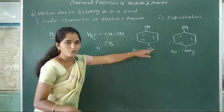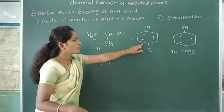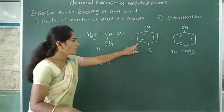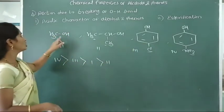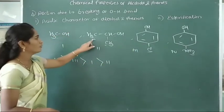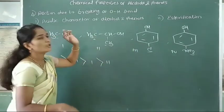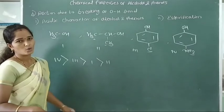The acid strength order of these compounds is: first, nitrophenol; second, chlorophenol; third, methyl alcohol; fourth, isopropyl alcohol.